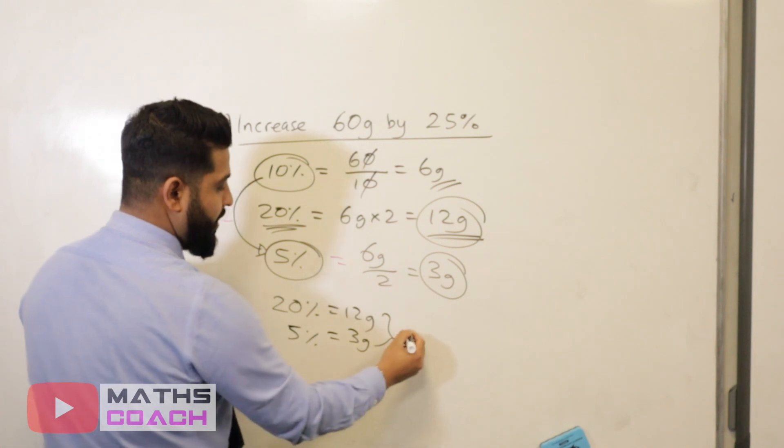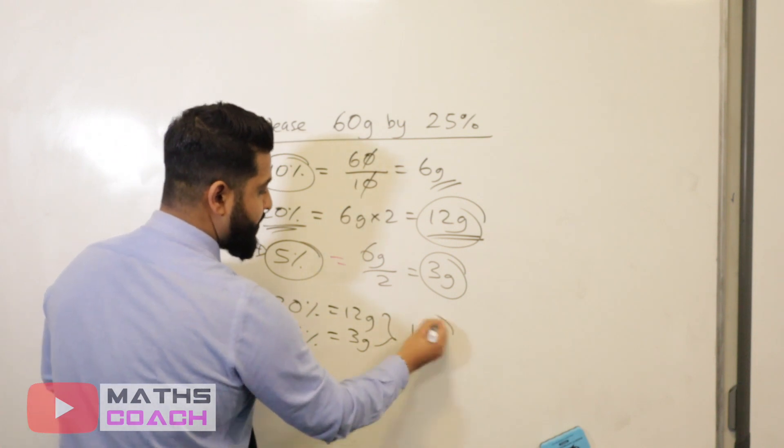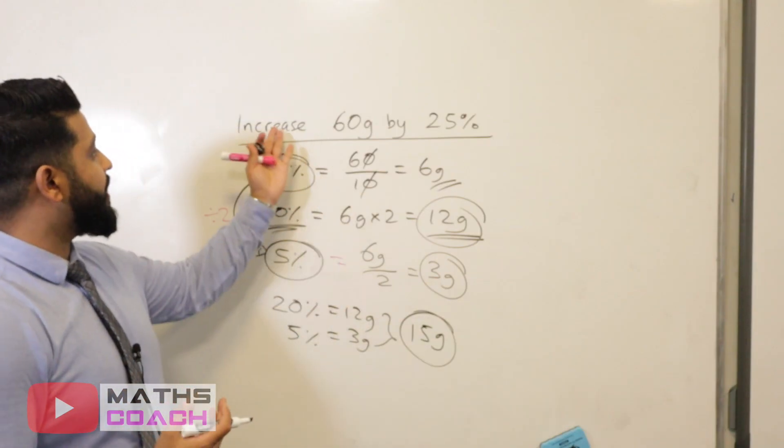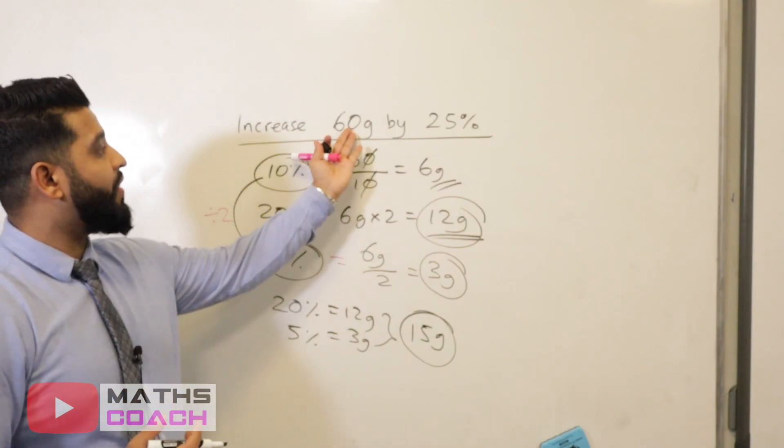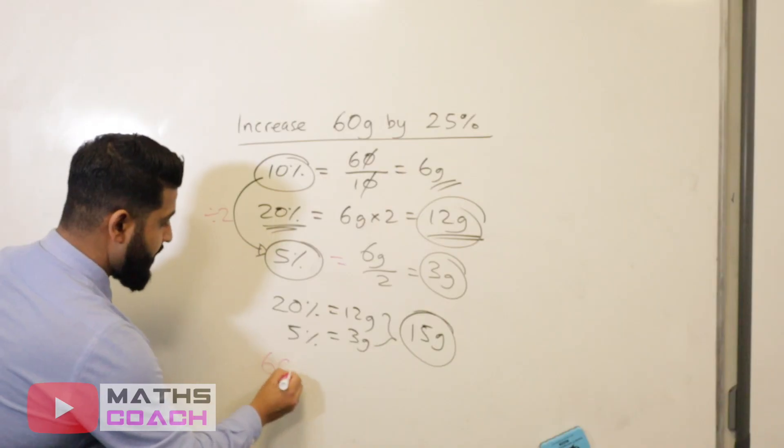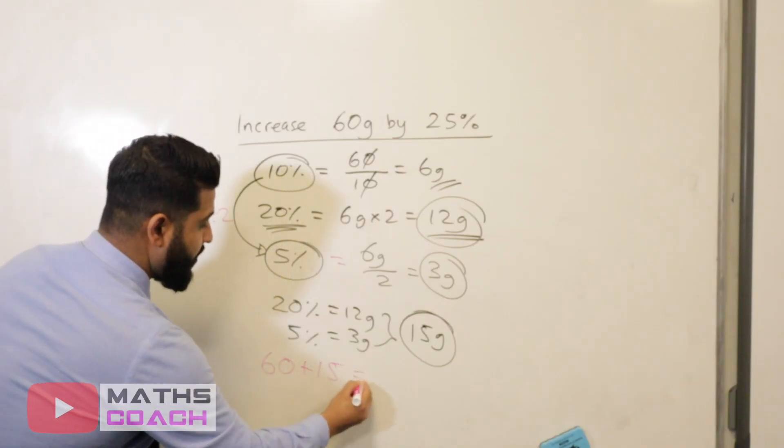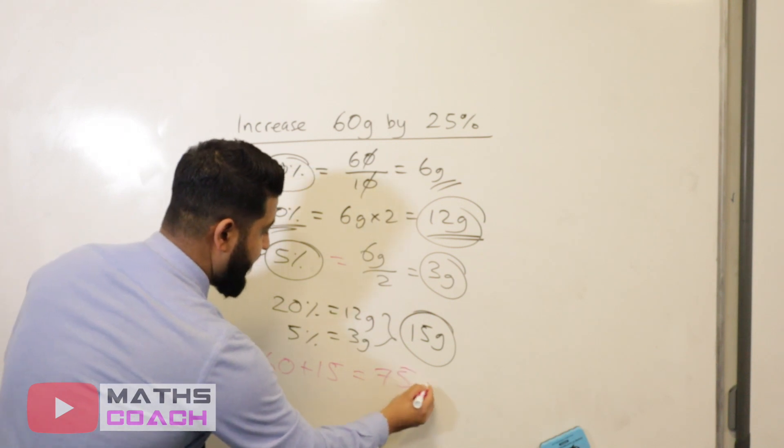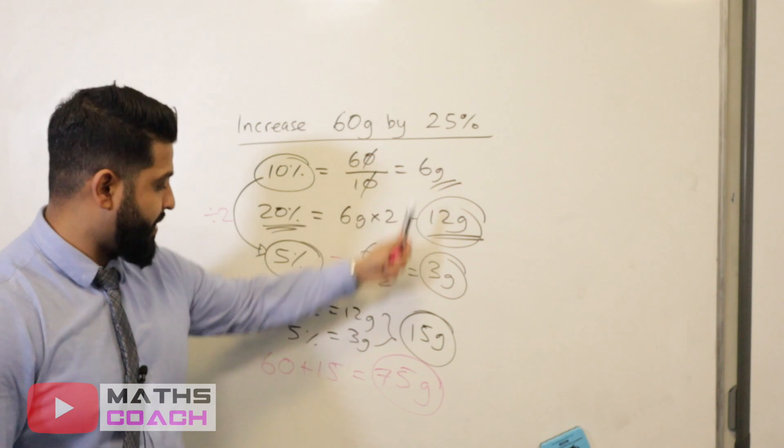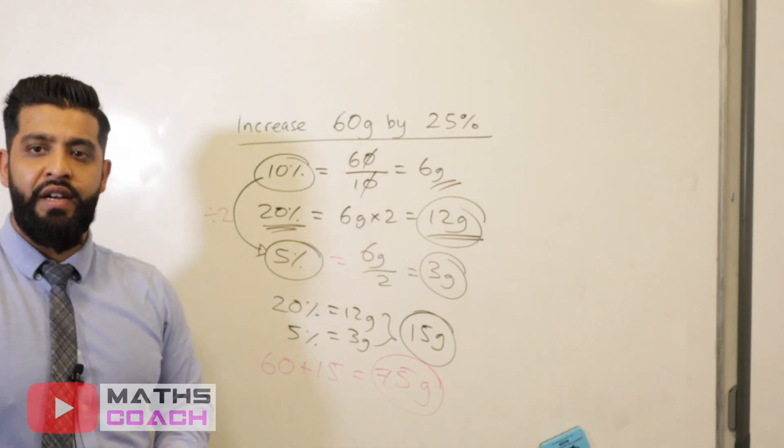So we have 20%, which is 12 grams. And we have 5%, which is 3 grams. And they make a total of 15 grams. And that is our 25%. All we need to do now is we need to increase that by our amount, which is 15 grams. 60 plus 15, which is 75 grams. So the increase of 60 grams by 25% is 75 grams.